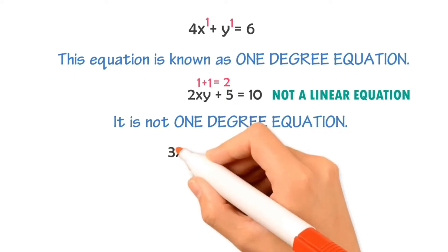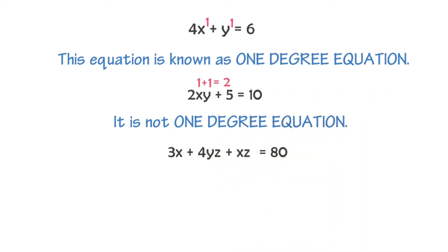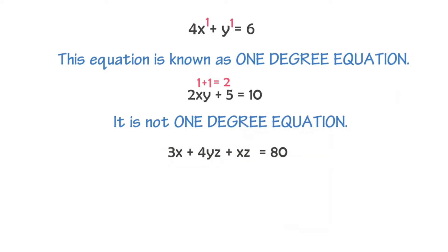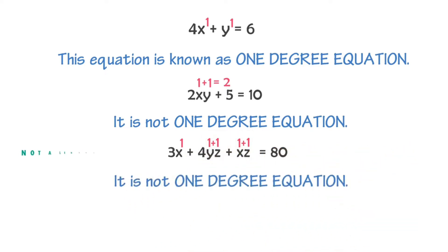Again, if I write 3x plus 4yz plus xz is equal to 80, this equation has four terms. The power of the first term x is 1. For the second term, the power of y is 1 and the power of z is also 1, so 1 plus 1 equals 2 — the power of the second term is 2. For the third term, x has power 1 and z has power 1, so 1 plus 1 equals 2. The highest power of this equation is 2, hence it is neither a one-degree equation nor a linear equation.